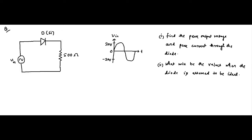When the diode is assumed to be ideal — that is, no voltage drop, no potential barrier — what will be the peak output voltage and peak current? One extra piece of information: the forward resistance of the diode is 10 ohm, which will be included in the first part of the solution.